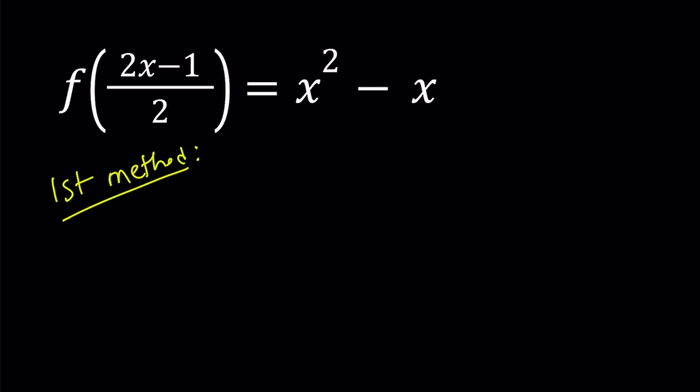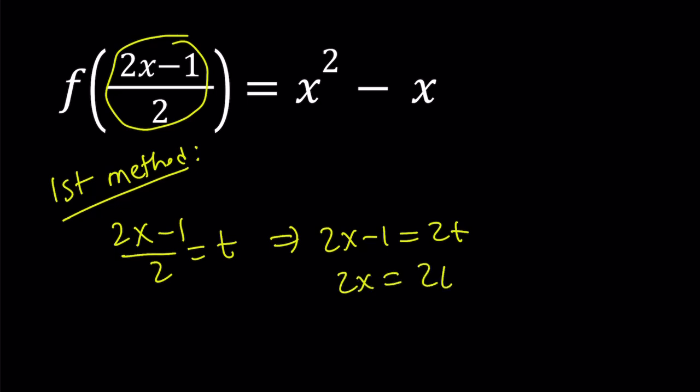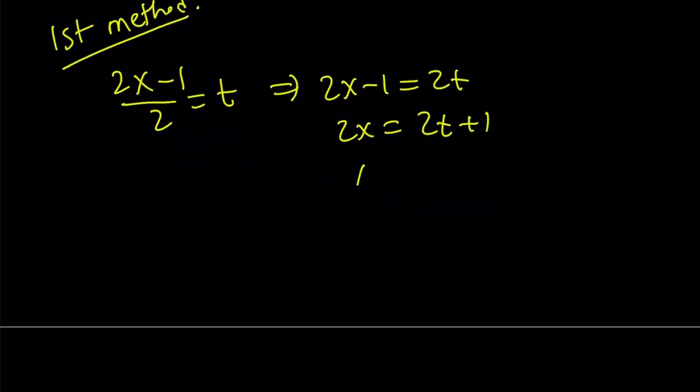For my first method, I'm going to set this expression right here to something. I think I'm going to set it equal to maybe t. And from here, I get the following: 2x minus 1 becomes 2t, and then 2x becomes 2t plus 1, and x becomes 2t plus 1 divided by 2.